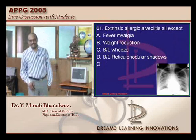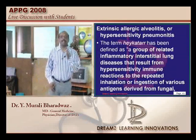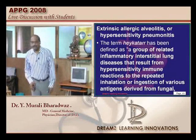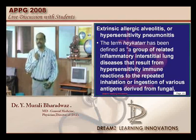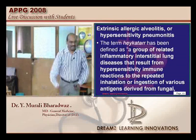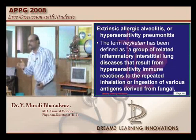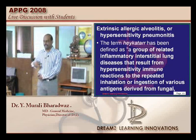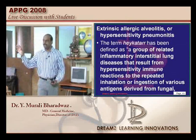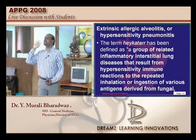Extrinsic allergic alveolitis — how do you recognize it? What is the difference between bronchial asthma and extrinsic allergic alveolitis? Wheeze is a feature of obstructive lung disease, but extrinsic allergic alveolitis is a restrictive pathology involving pneumonitis. You don't find wheeze, which differentiates it from obstructive pathologies that can also cause reticulonodular shadows radiologically.